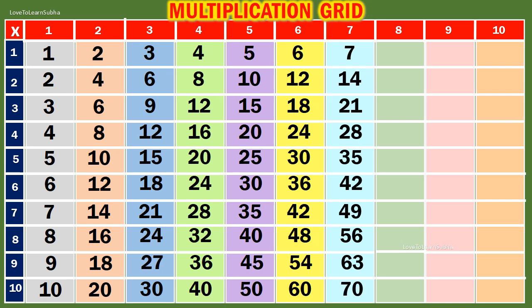Table of 8. 8 1s are 8. 8 2s are 60. 8 3s are 24. 8 4s are 32. 8 5s are 40. 8 6s are 48.